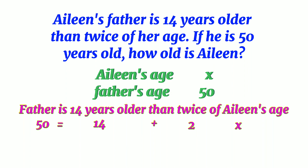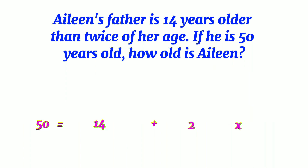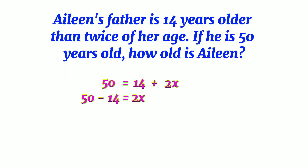To solve for X, we will remove the constant term on the right side of the equation by transposing it to the left side. We now have 50 minus 14 is equal to 2x. Simplifying, we have 36 is equal to 2x.